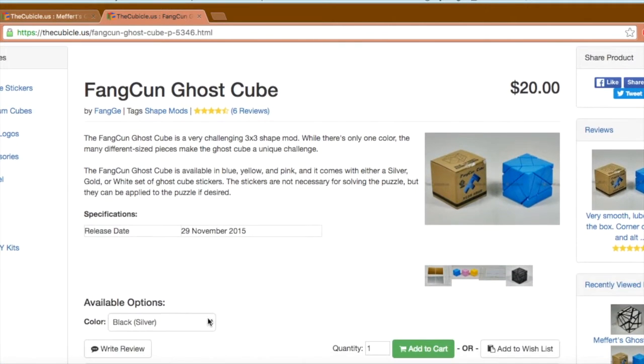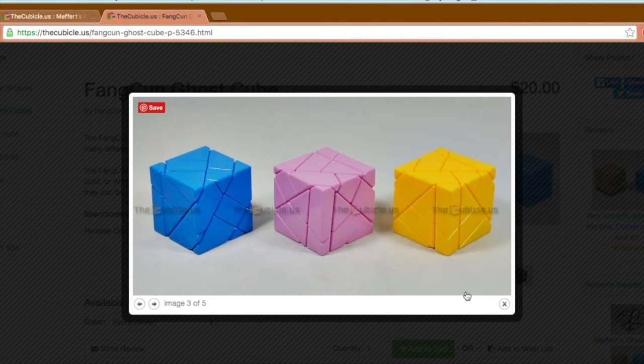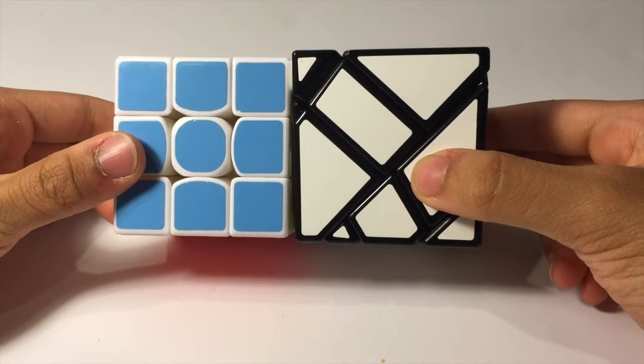There is currently a Ghost Cube on the cubicle though, and it is the Fang Kun. This cube is larger than your standard 3x3.